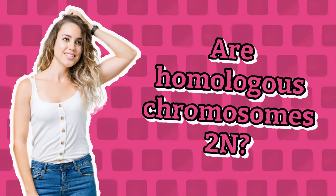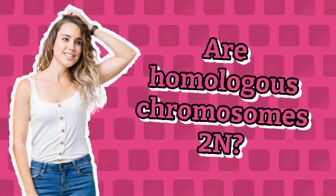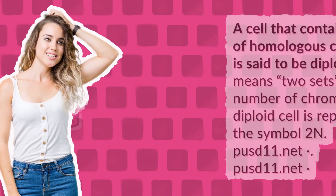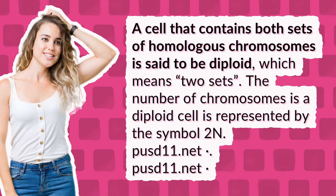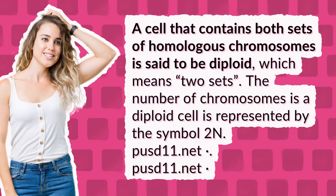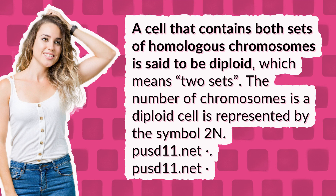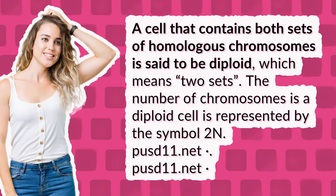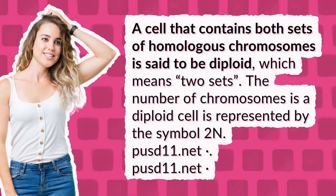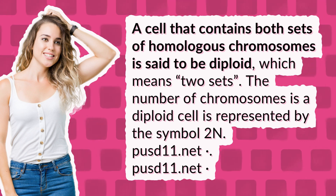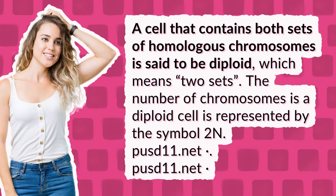Are homologous chromosomes 2N? A cell that contains both sets of homologous chromosomes is said to be diploid, which means two sets. The number of chromosomes in a diploid cell is represented by the symbol 2N.